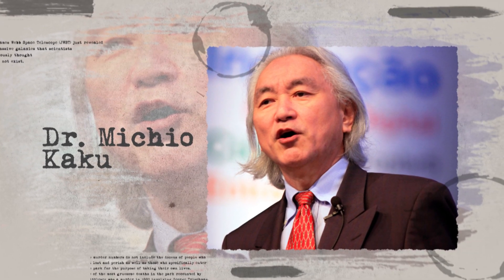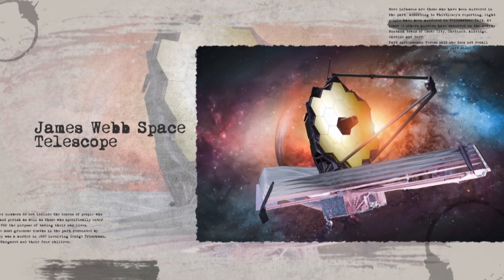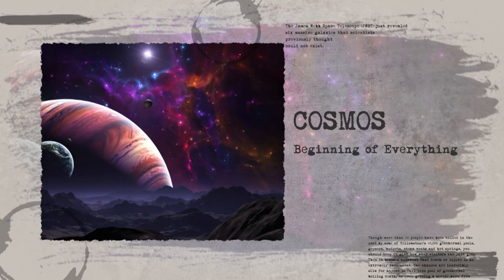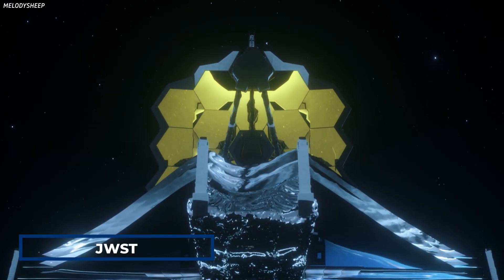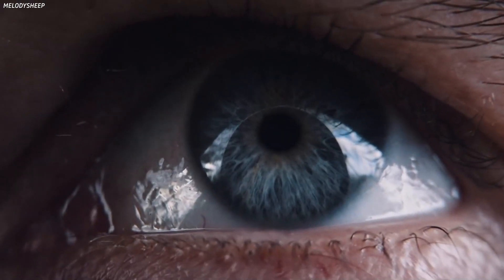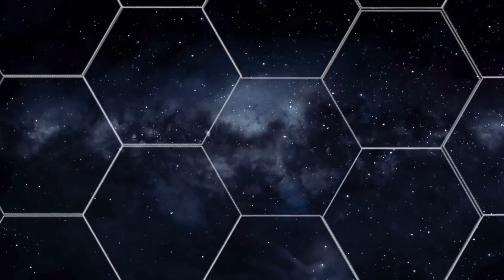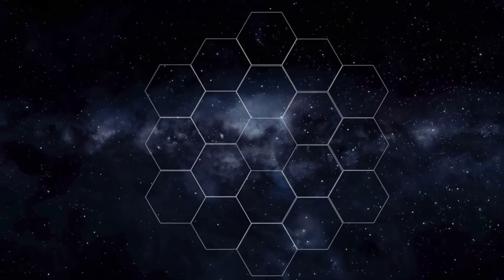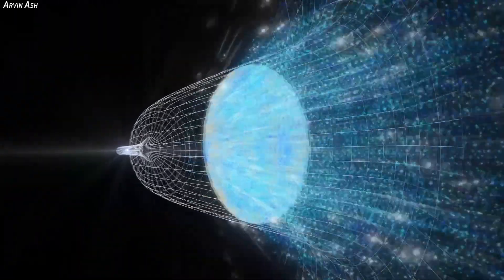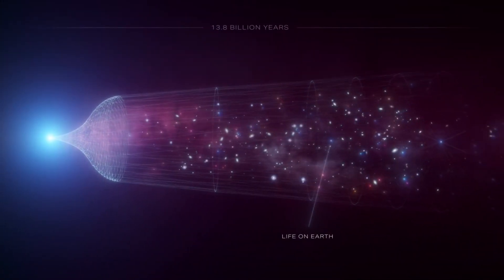Renowned American theoretical physicist Michio Kaku just shared a stunning discovery made by the James Webb Space Telescope, and it changes everything we know about the cosmos and its existence. The James Webb Space Telescope, or JWST, is one of the most advanced space observatories ever built, and it is set to revolutionize our understanding of the universe. One of its primary objectives is to observe the very first galaxies that formed after the Big Bang. These galaxies are thought to have formed just a few hundred million years after the birth of the universe, and they hold valuable clues to the early evolution of our cosmos.